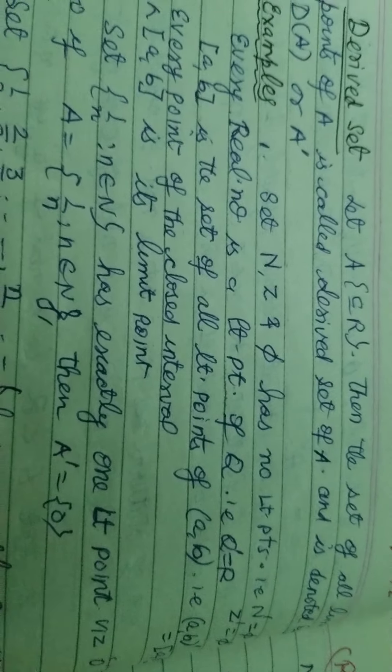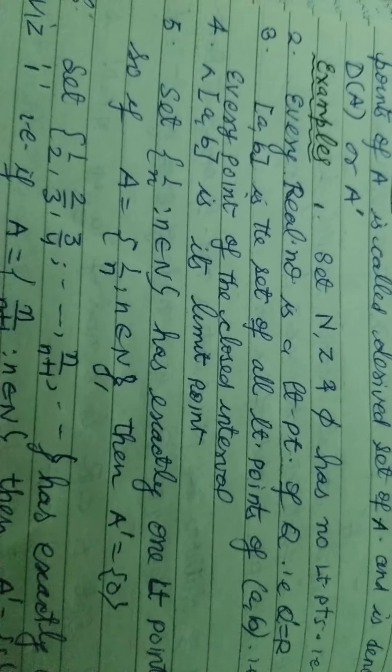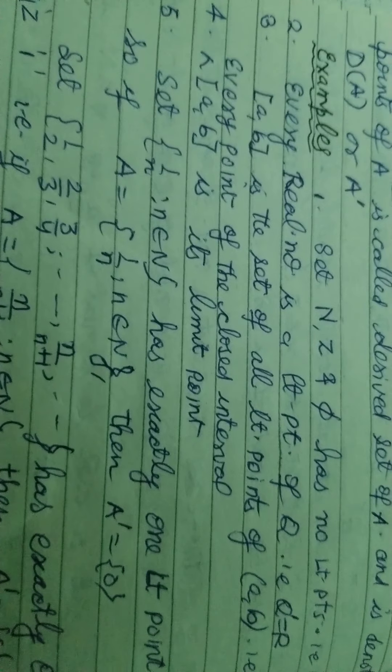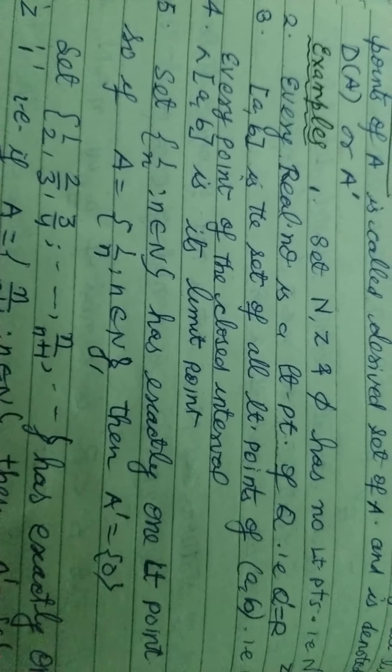The closed interval [A, B] is the set of all limit points of the open interval (A, B). Every point of the closed interval [A, B] is its limit point.